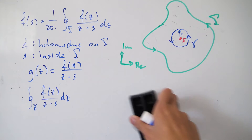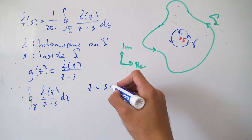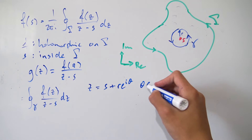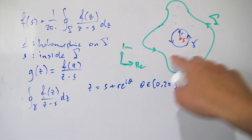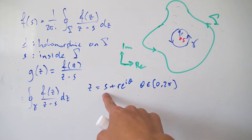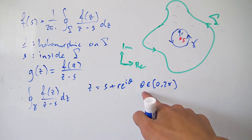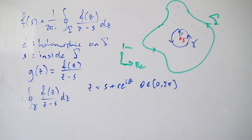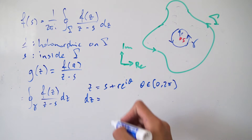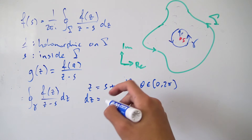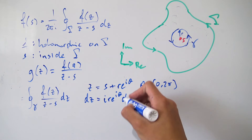Since little gamma is a circle of radius r centered at s, we can do a parameterization. Our parameterization is z equals s plus r·e^(iθ), where θ goes from 0 to 2π. This works because we have a circle of radius r, starting at point s and making a full revolution. Differentiating both sides, dz equals i·r·e^(iθ) dθ, since s is just a constant.